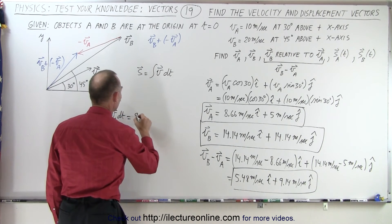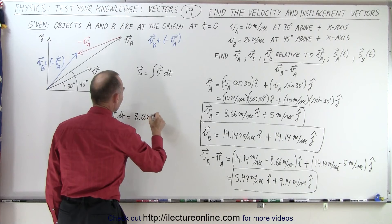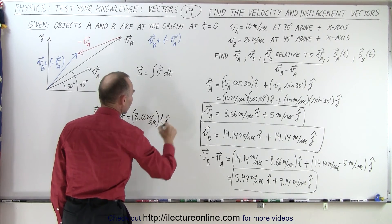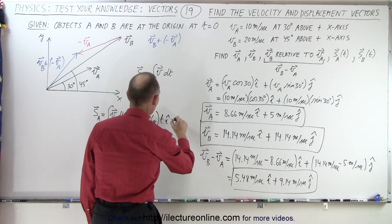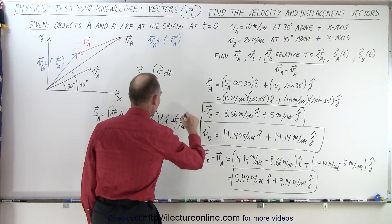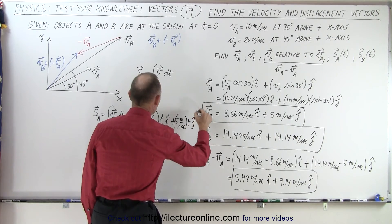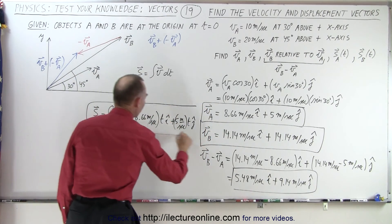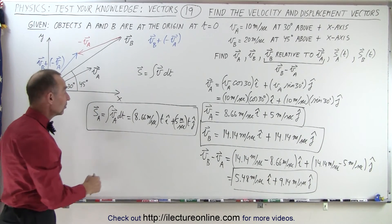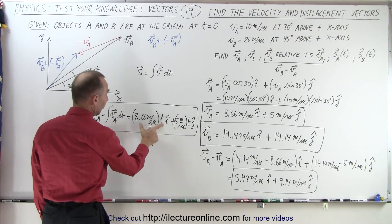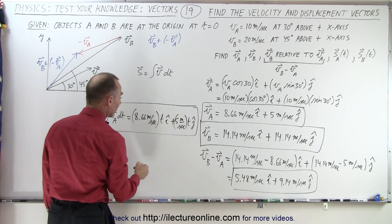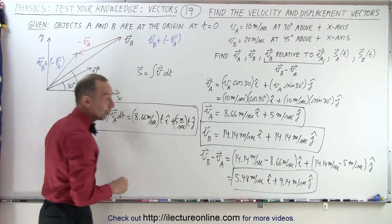The displacement vector for particle A is the integral of VA dT, giving us 8.66t m/s in the i-direction plus 5t m/s in the j-direction. At zero seconds this is zero; after one second we get those values; after two seconds we multiply by two, and so forth.